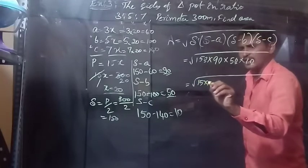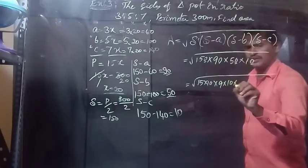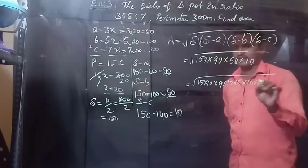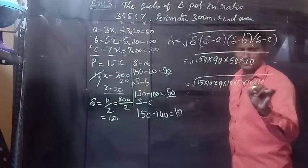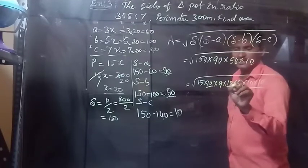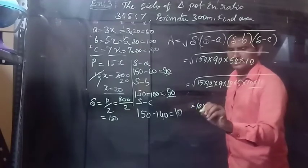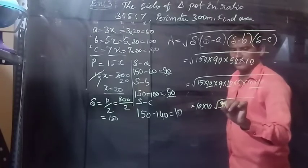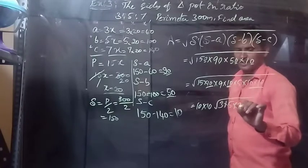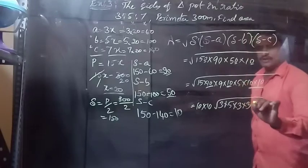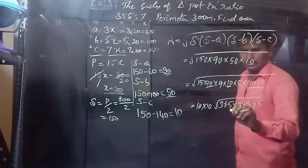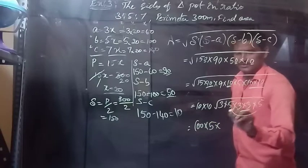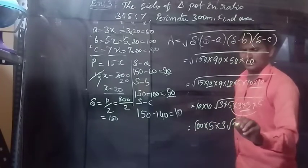Now we simplify √(150 × 90 × 50 × 10). Grouping in pairs: 50×10 gives factors, 15 gives three 5s, 9 is a perfect square giving three 3s. We take 5×5 as a group outside and 3×3 as a group outside, leaving a remainder of 3 inside.